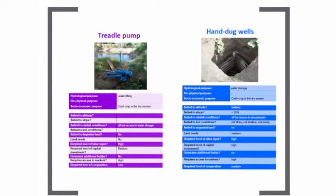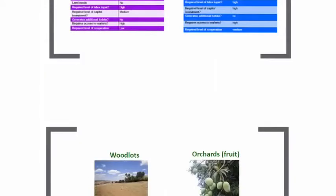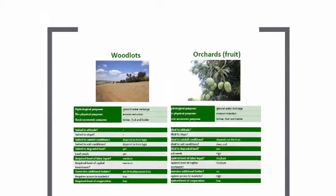The cards show whether a technology or management practice is most suited in terms of rainfall conditions, temperature, geomorphology, and land use type. And very importantly, what requirements it has in terms of land, labour, cooperation among stakeholders, cash, or access to markets. Without these requirements being understood, an otherwise suitable technology will fail.